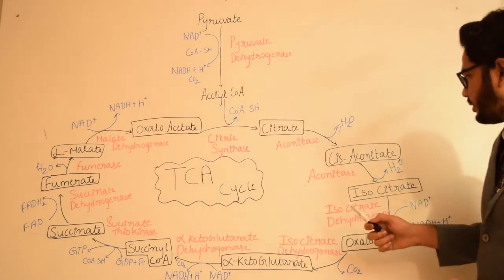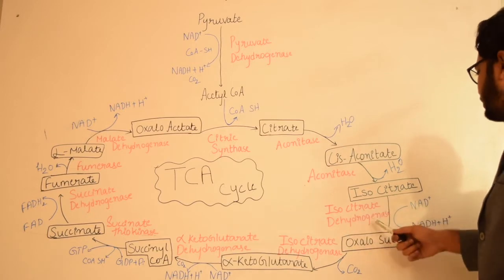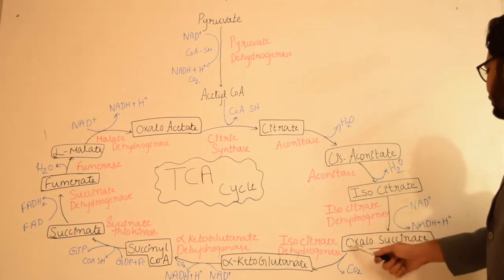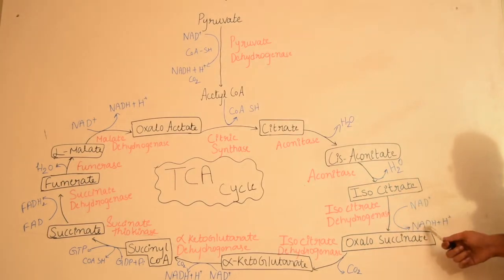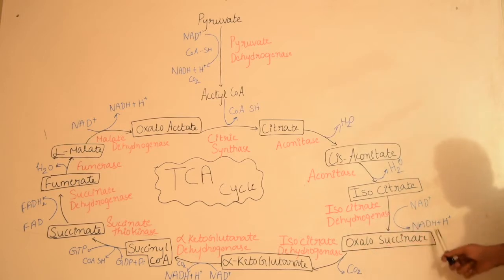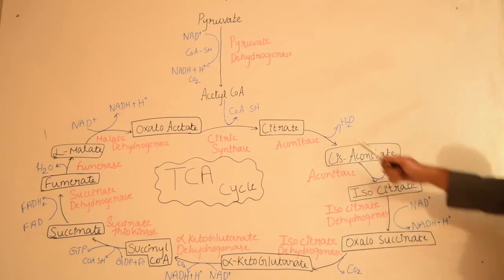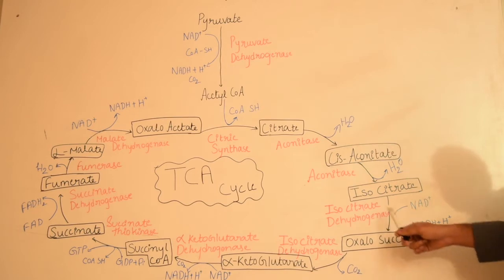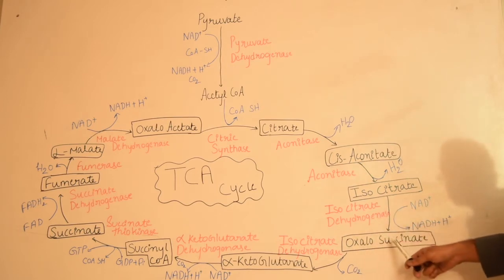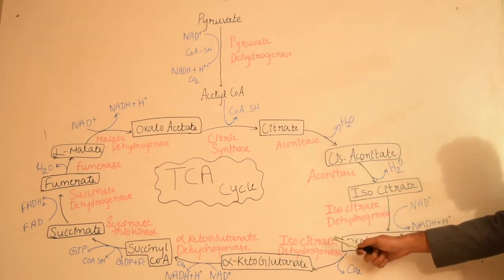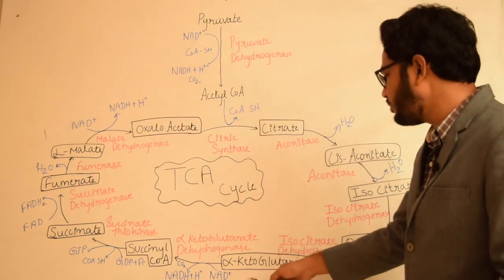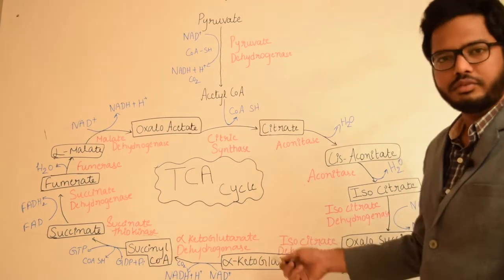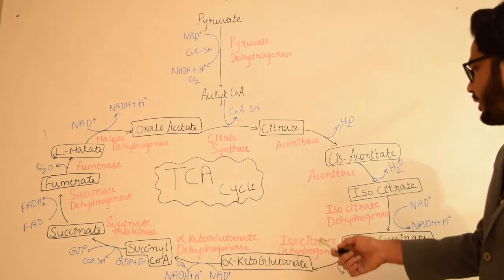Once isocitrate is formed, important reactions occur. In the presence of the enzyme isocitrate dehydrogenase, there is formation of oxalosuccinate and simultaneously conversion of NAD⁺ to NADH. At this point we have six-carbon molecules, and in the presence of isocitrate dehydrogenase there is release of carbon dioxide leading to formation of the five-carbon alpha-ketoglutarate.